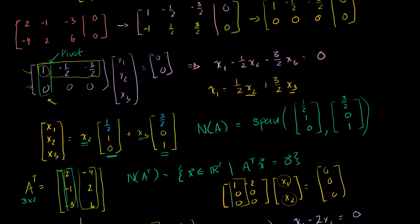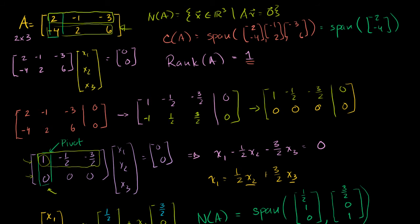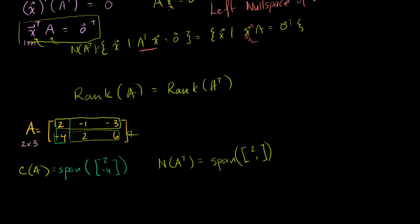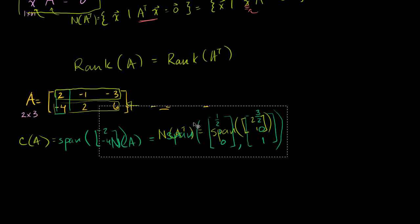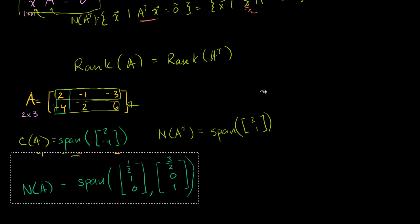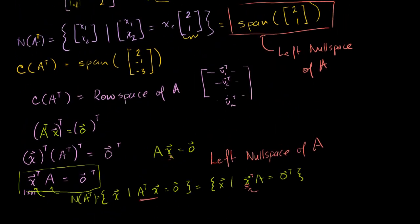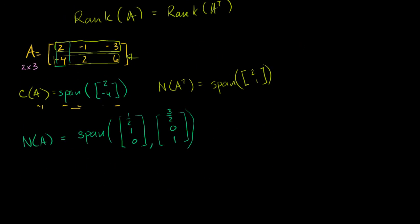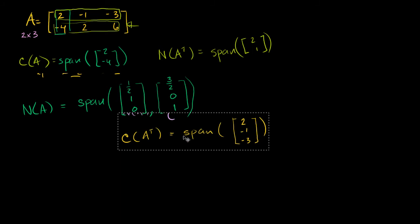Our null space, which we figured out in the last video, is the span of two R3 vectors. And the row space, or the column space of our transpose, was the span of one R3 vector.